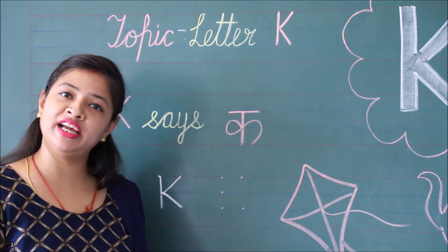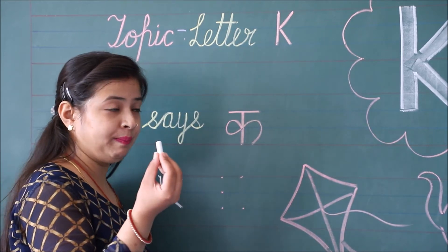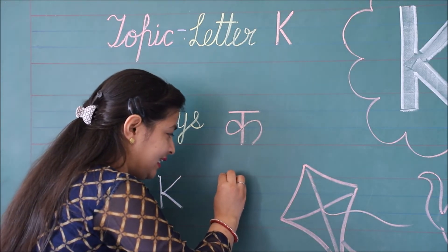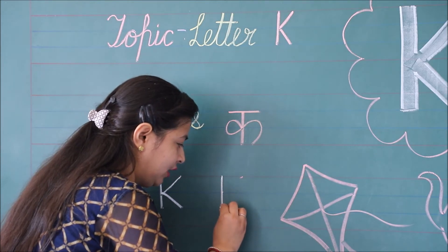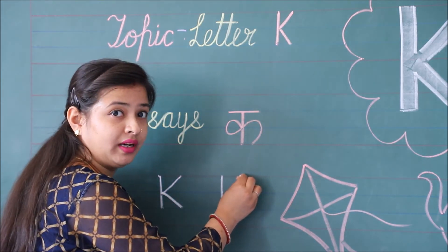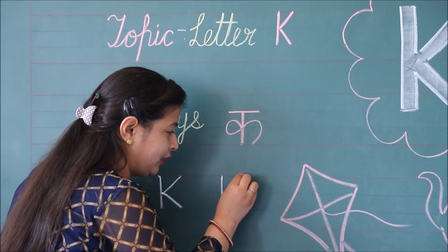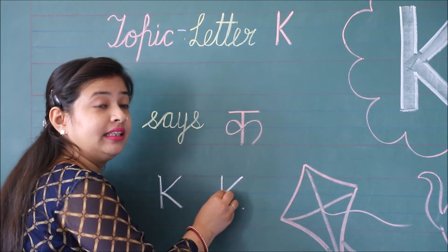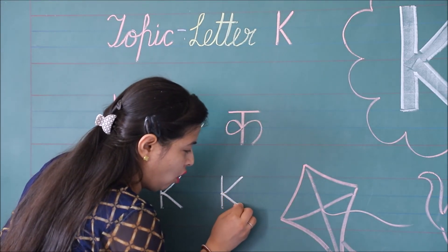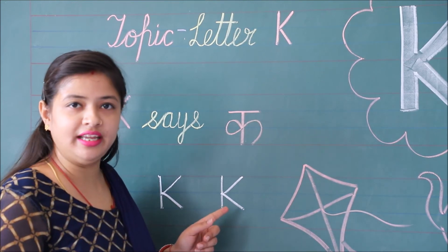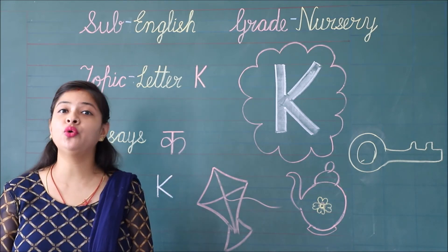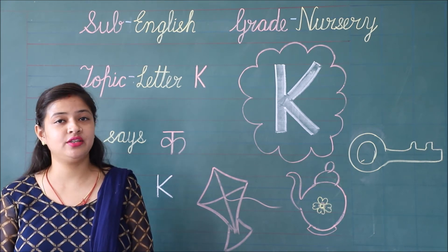Let's practice one more time. Keep your pencil on the second line and make a slanting line to the third line dot. Your letter K is ready. Now you can form capital letter K. Make sure you write the given dots properly in lines.